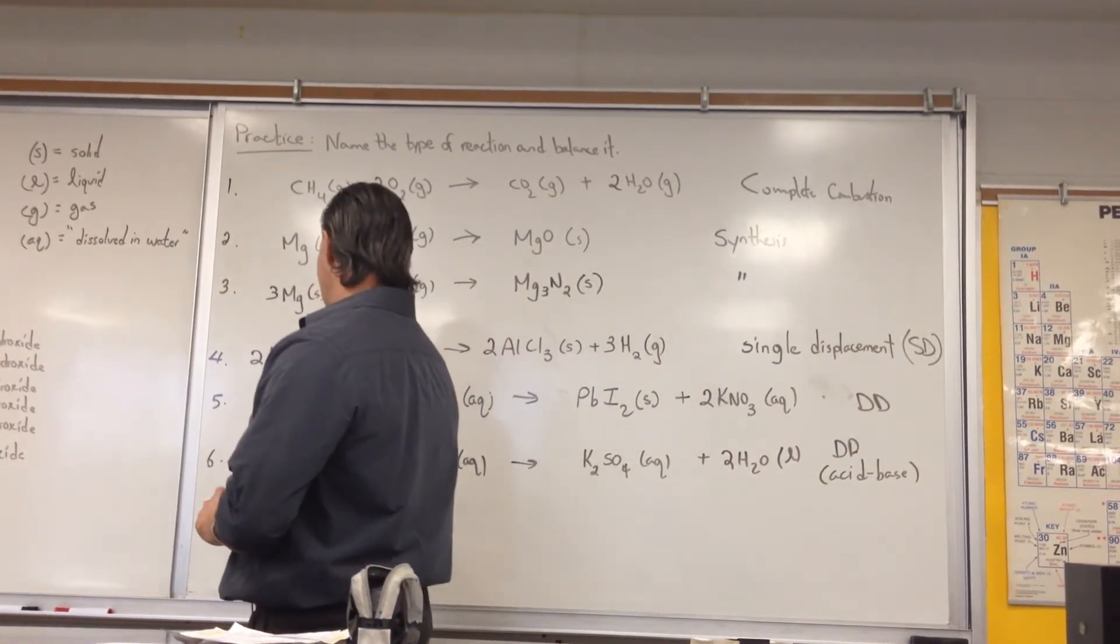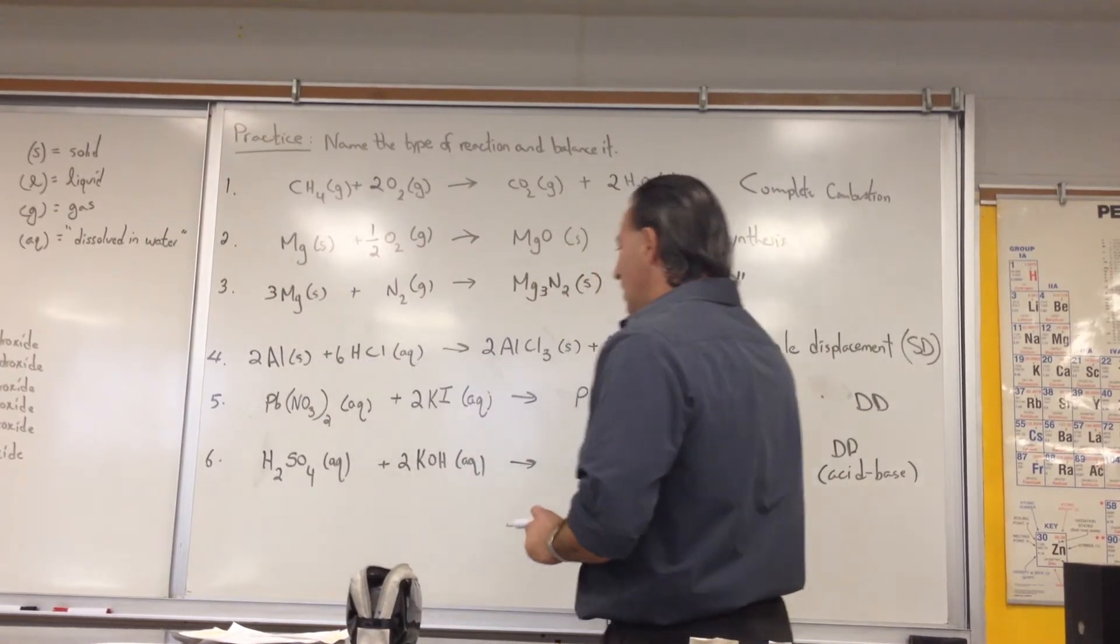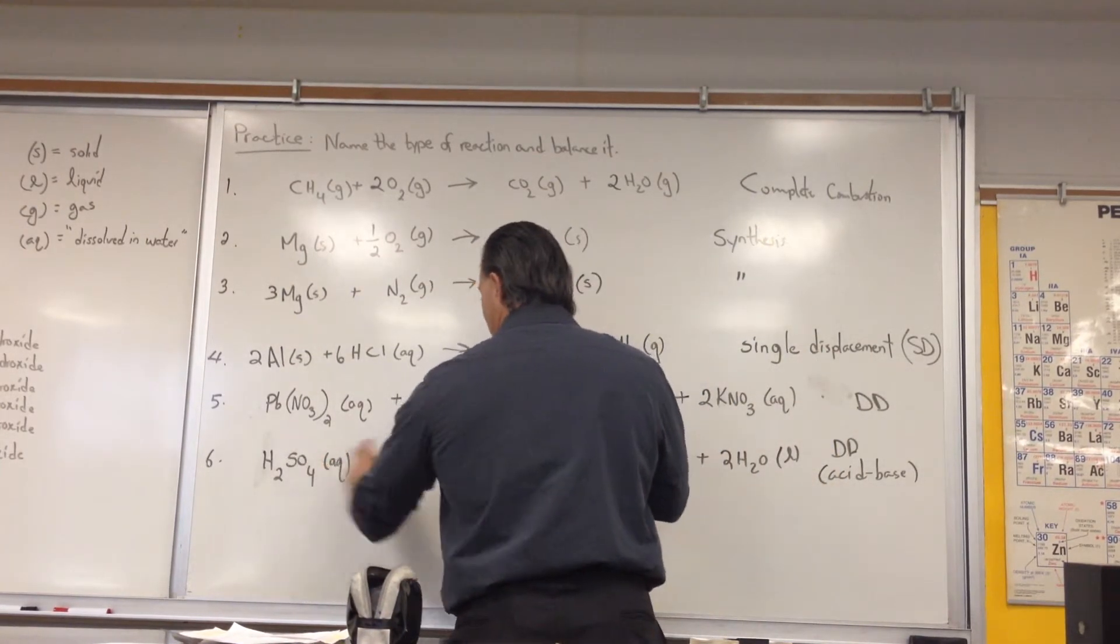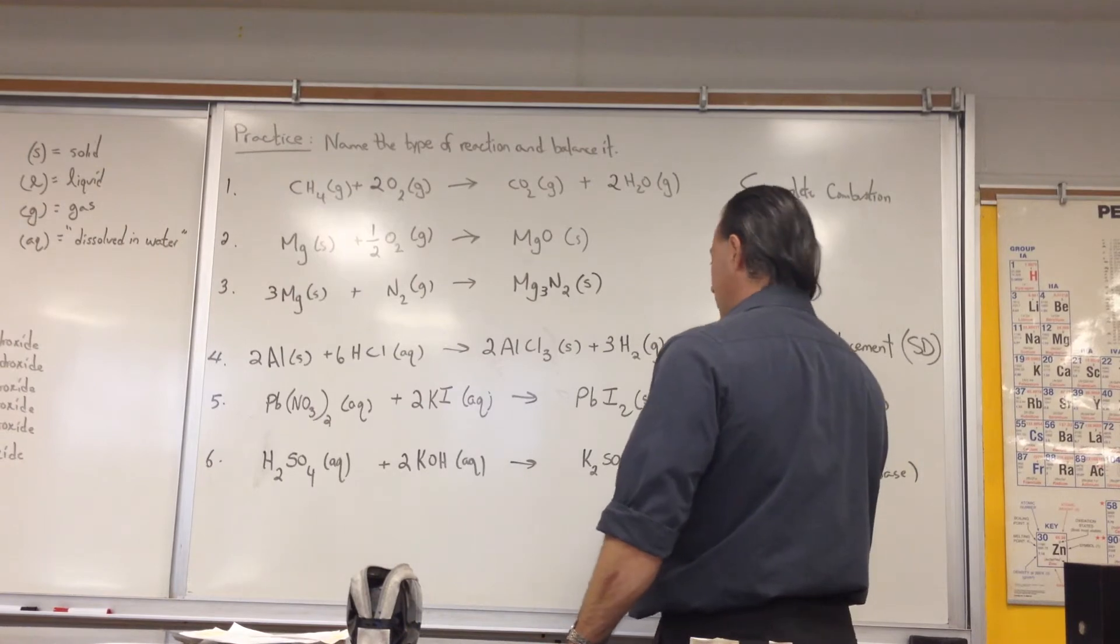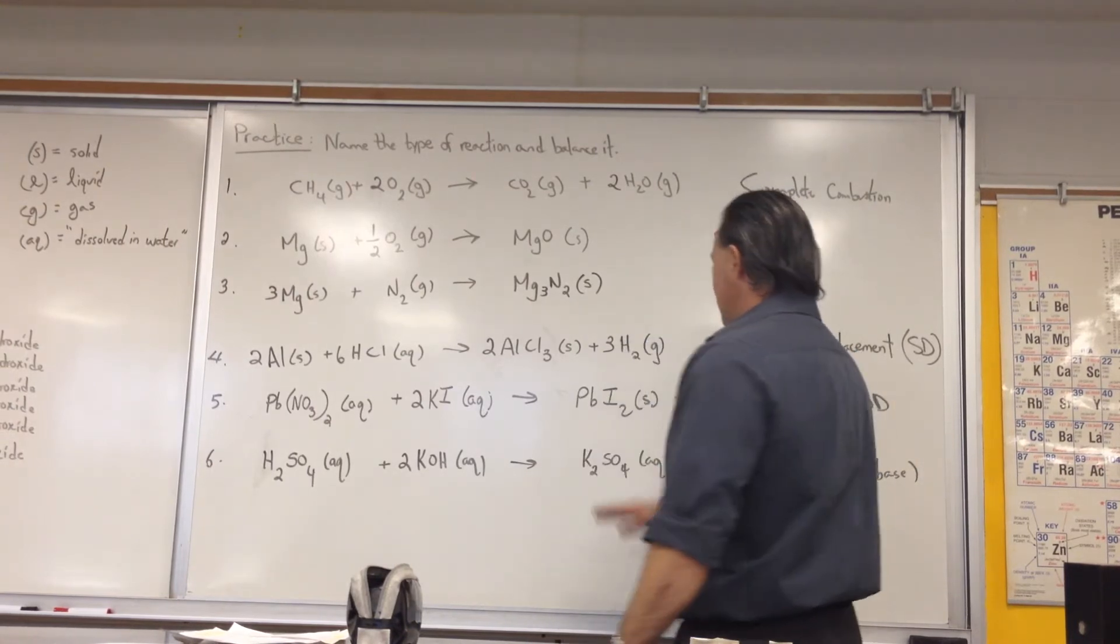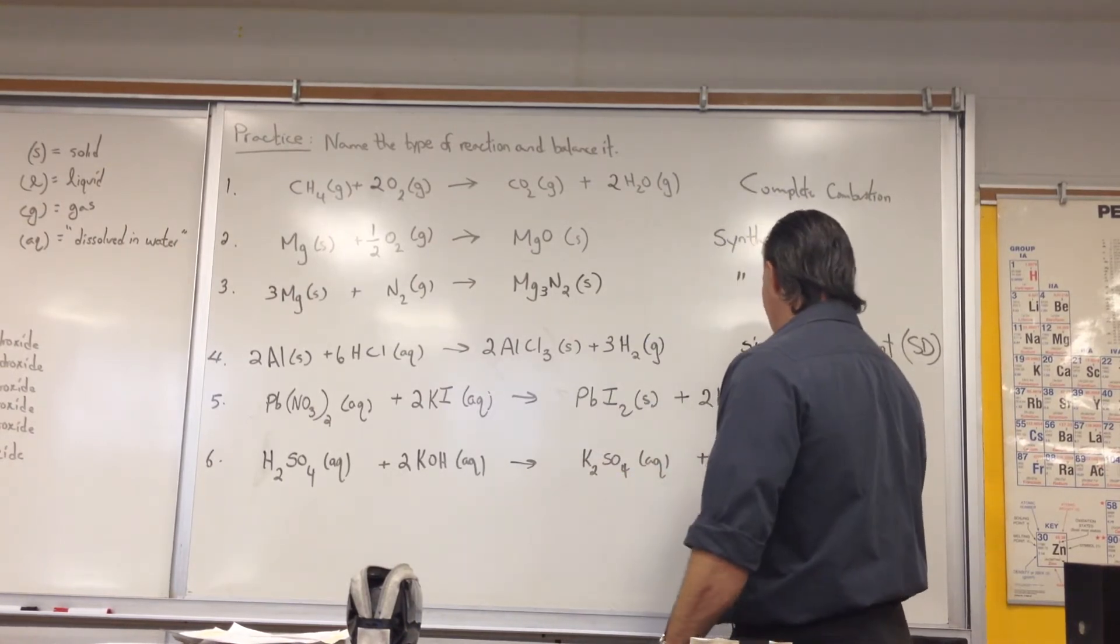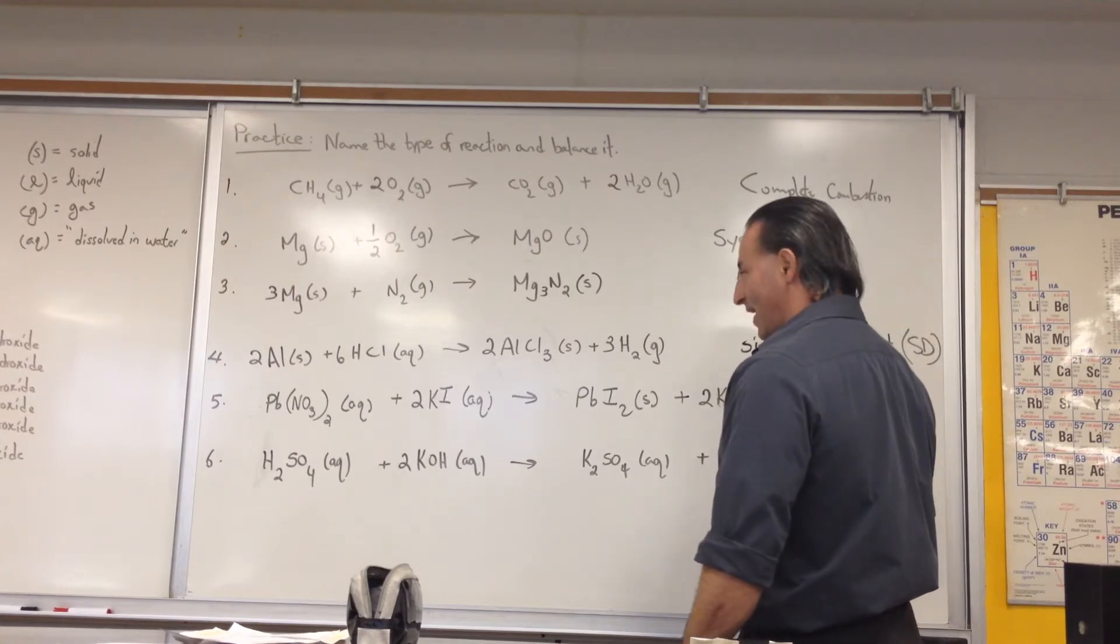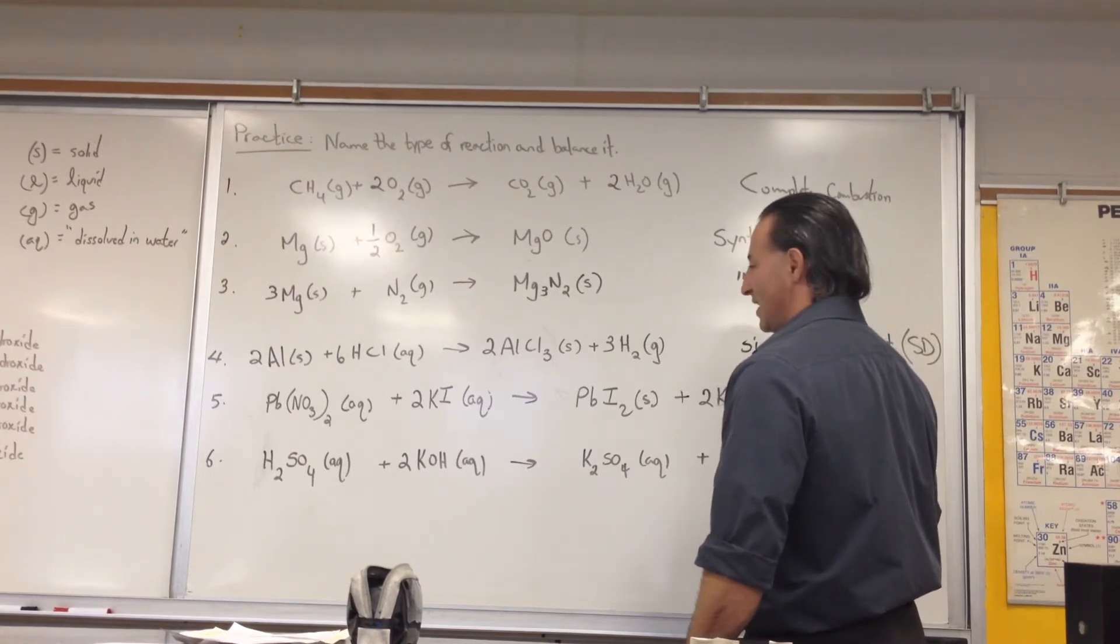The next reaction shows sulfuric acid combined with potassium hydroxide. Sulfuric acid is a strong acid. Potassium hydroxide is a strong base. The product is a salt and water. It's a double displacement reaction, but it's also categorized as an acid-base reaction.